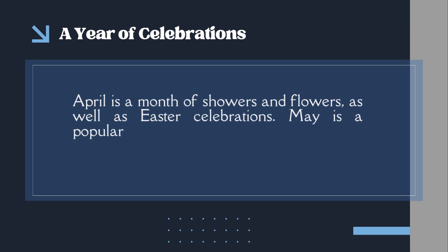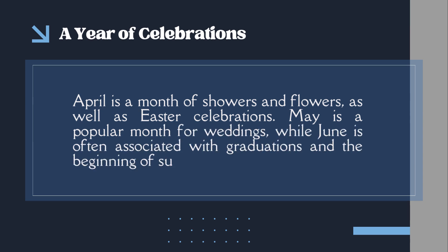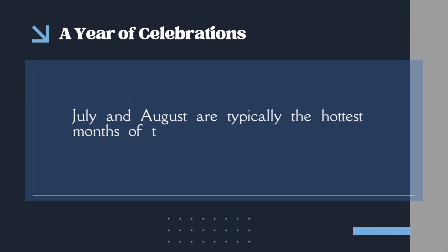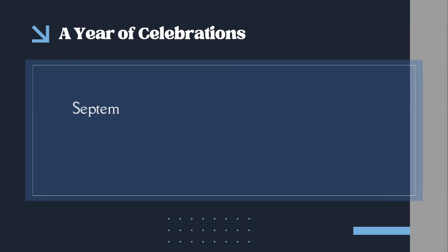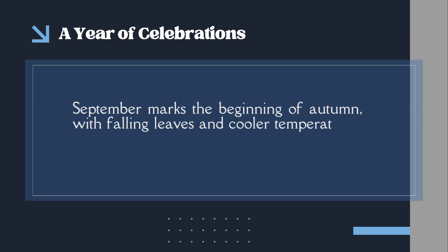May is a popular month for weddings. While June is often associated with graduations and the beginning of summer, July and August are typically the hottest months of the year, perfect for enjoying outdoor activities. September marks the beginning of autumn, with falling leaves and cooler temperatures. October is known for Halloween,